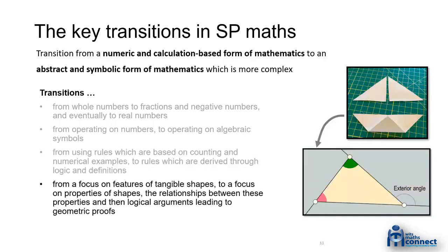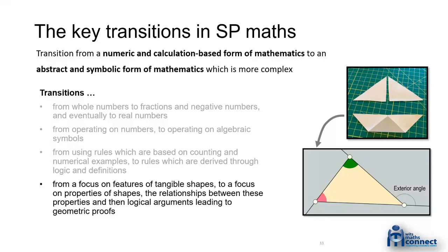The final major shift is from a focus on the features of tangible shapes — stuff you can fold, touch, and rotate — to a focus on properties and the relationships between those properties, and then the logical arguments that follow in Euclidean geometry. This is a massive shift in space and shape work as learners move into the senior phase. Bottom line: if learners don't master the foundational knowledge, they won't cope with the transitions they hit in high school. The majority of learners in this country don't master those transitions, which is partly why most are doing Mathematical Literacy rather than Mathematics.